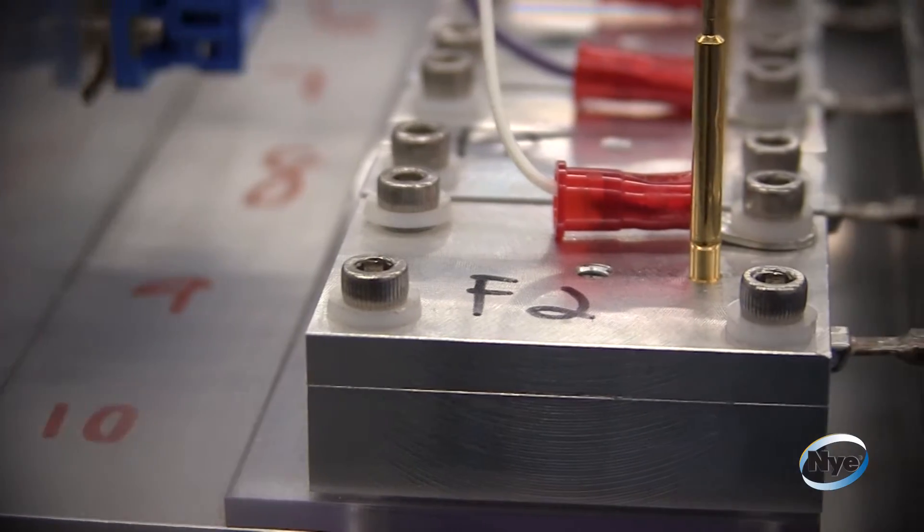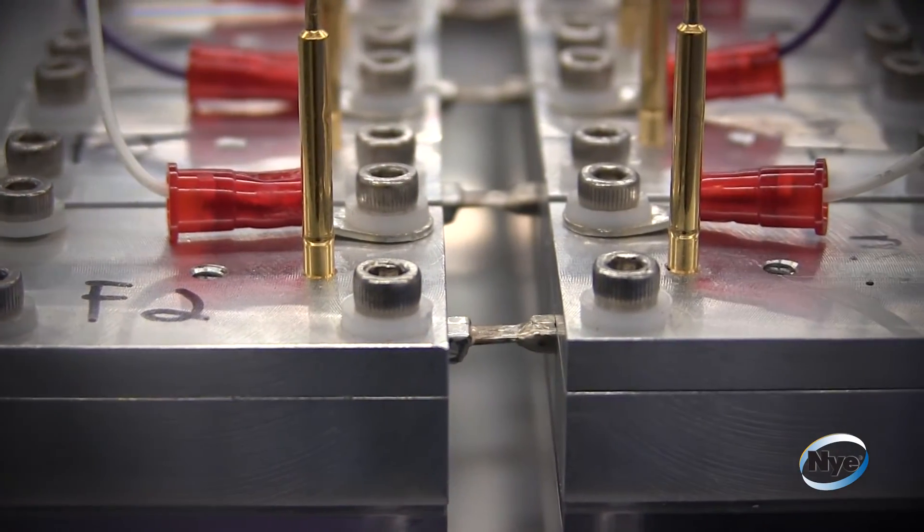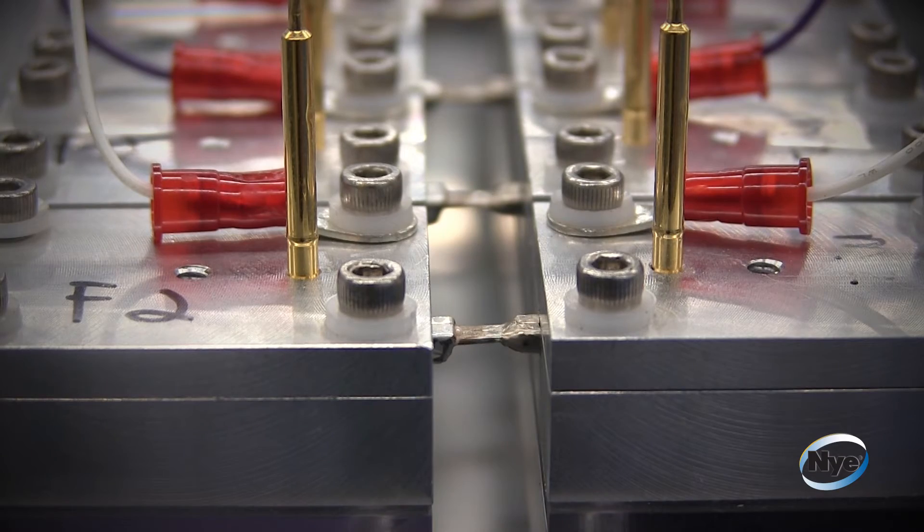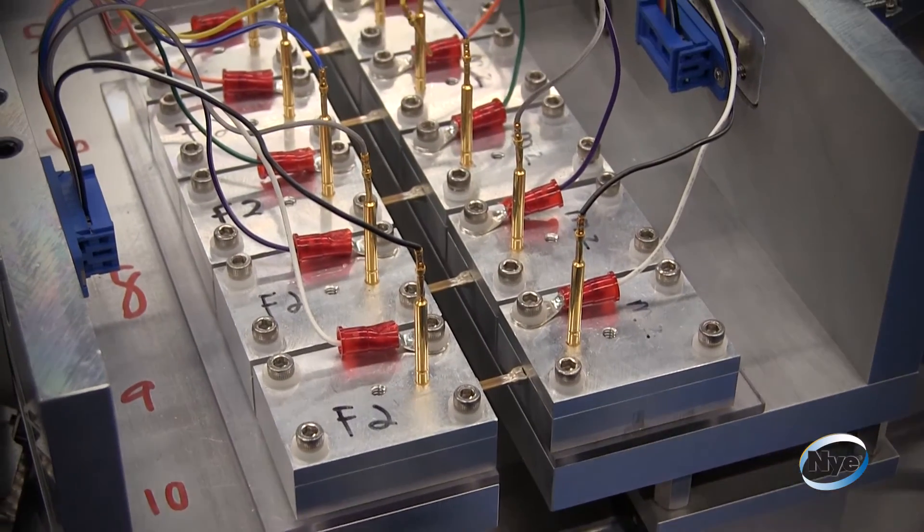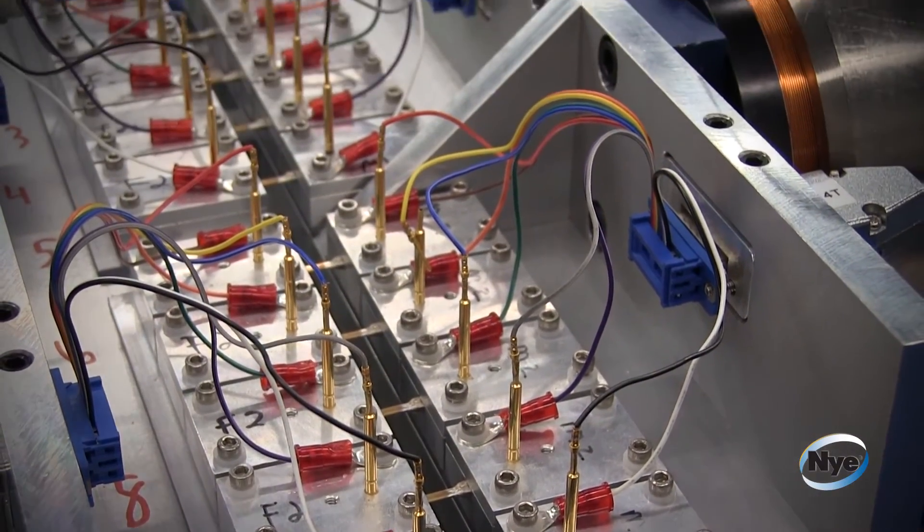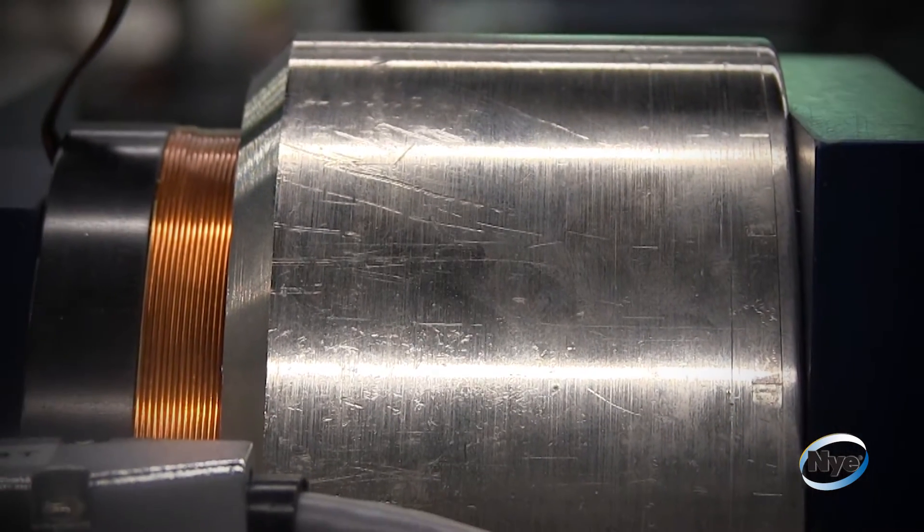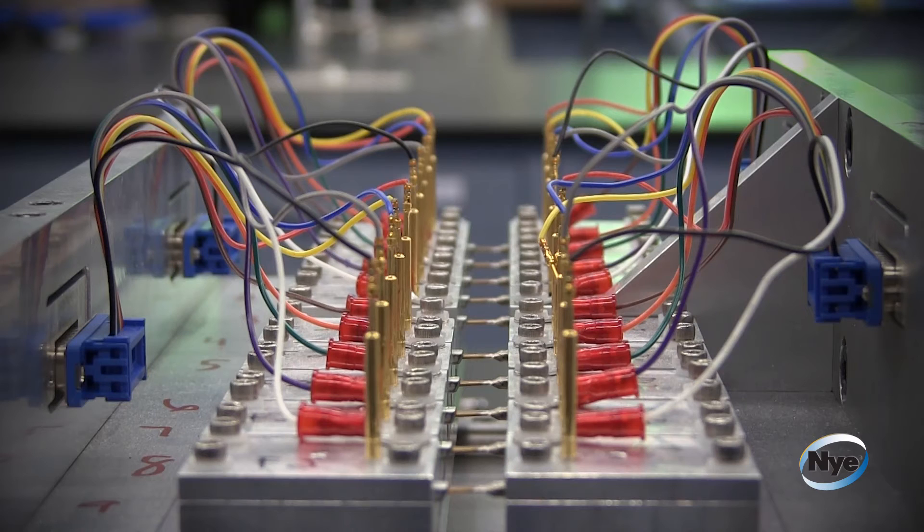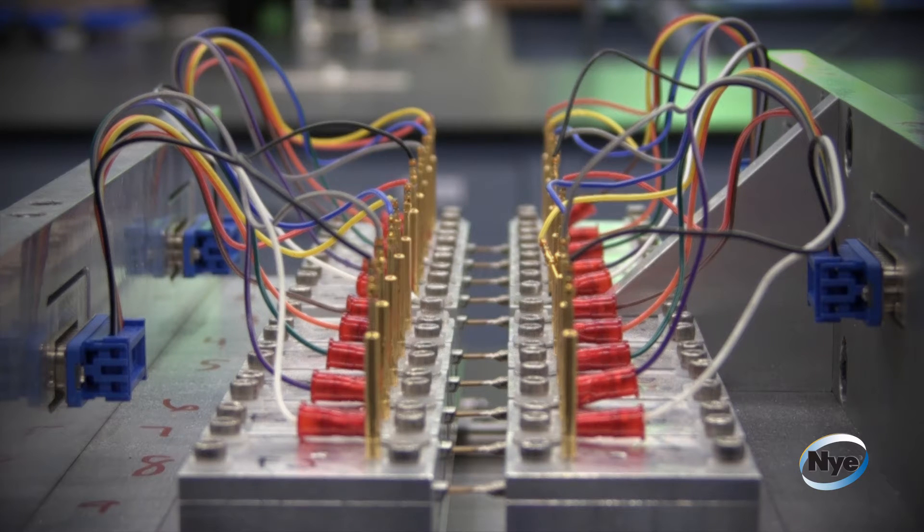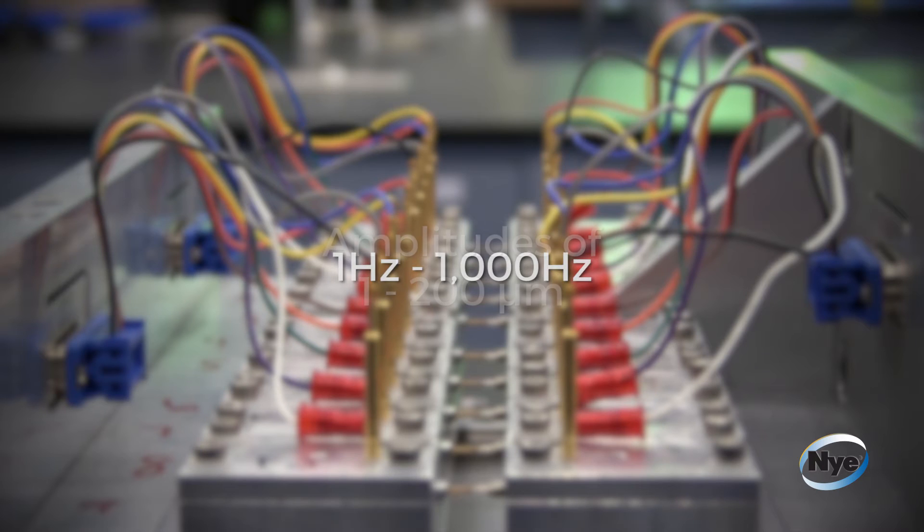This leads to a significantly increased life over bare terminals. The fretting wear test apparatus designed by Nye's ADVT team is based upon a magnetic linear actuator which operates using the Lorentz force law. This actuator produces oscillations in a frequency range of 1 hertz to 1000 hertz, amplitudes of 1 to 200 micrometers,